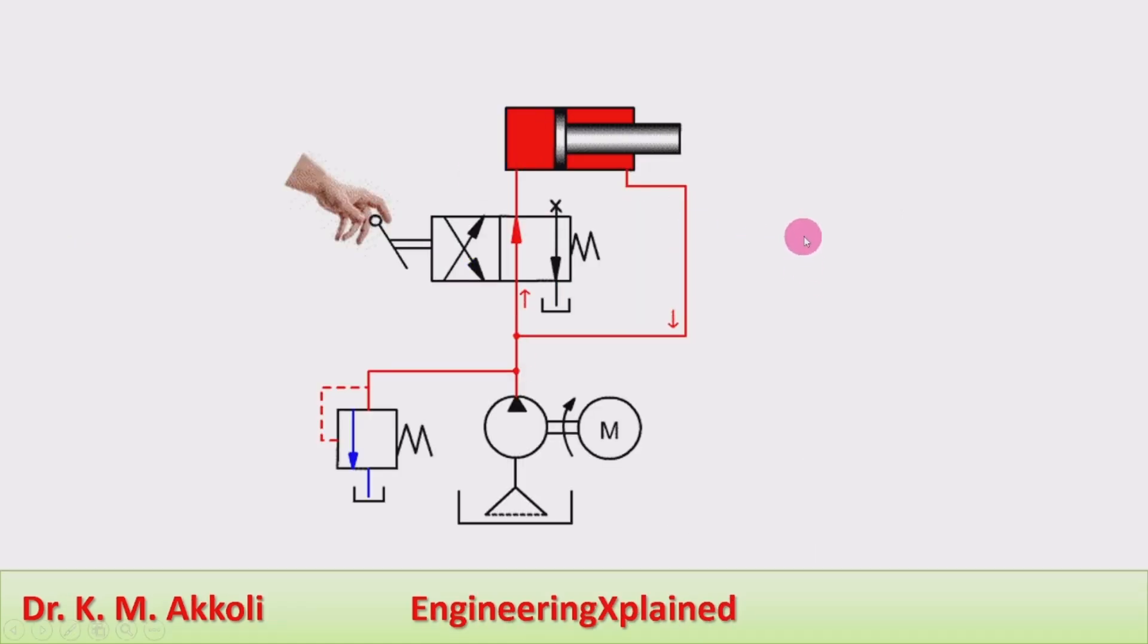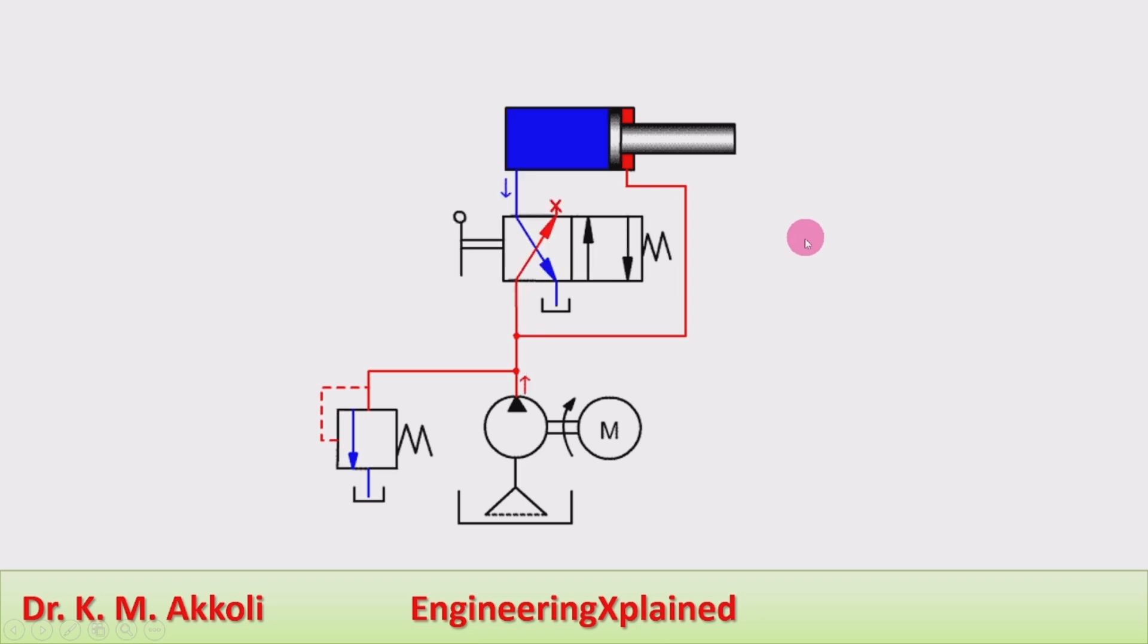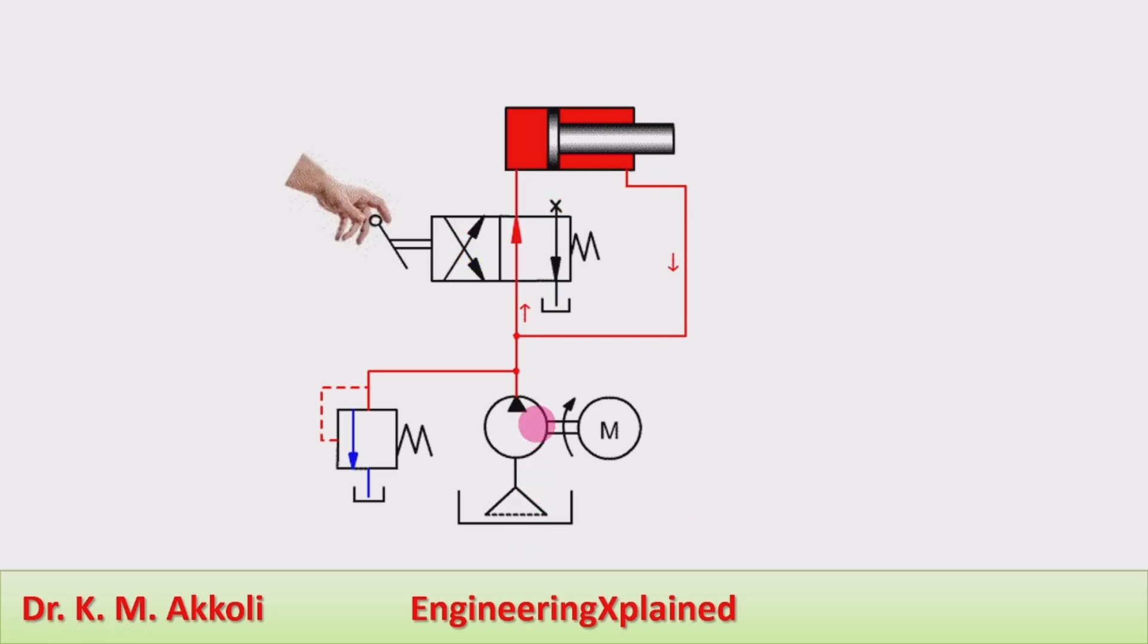This is the arrangement of the regenerative cylinder circuit. It consists of a tank, pump, direction control valve, pressure relief valve, and double acting cylinder.